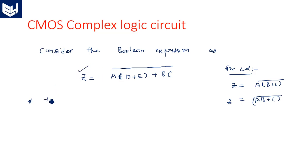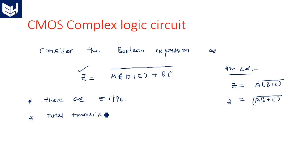In this design, the example we have considered has five inputs: A, B, C, D, and E. Now, how many transistors do we need? In CMOS realization — remember, this is very important — the number of transistors is equal to two times the number of inputs.